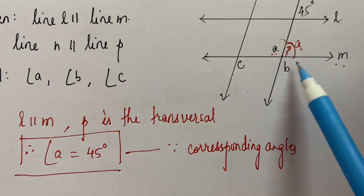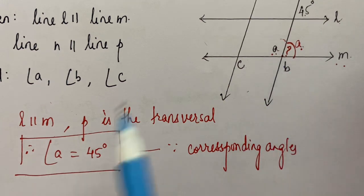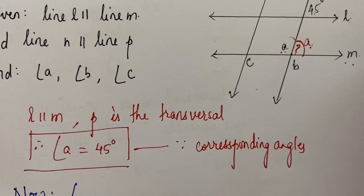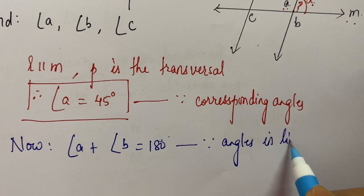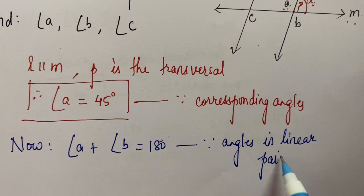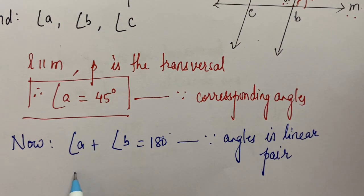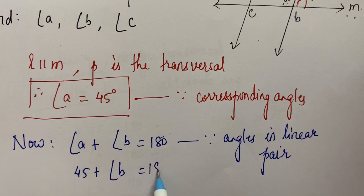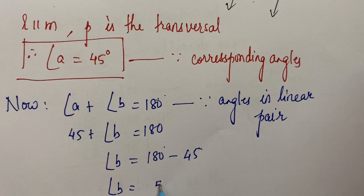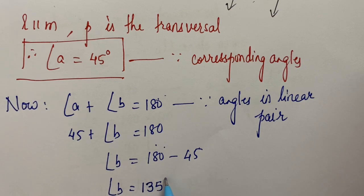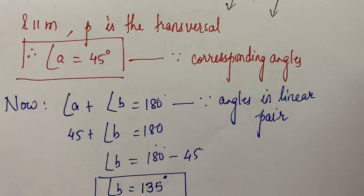Angle A and angle B are angles in a linear pair, so their sum will be 180°. Angle A plus angle B equals 180°, since they are angles in a linear pair. Since angle A is 45°, we get 45° plus angle B equals 180°. So angle B will be 180° minus 45°, which gives angle B equal to 135 degrees.